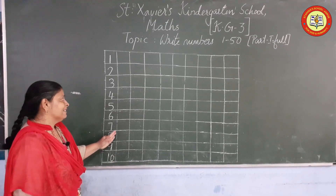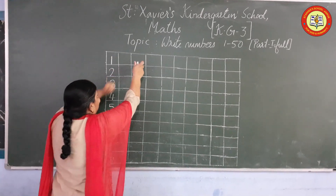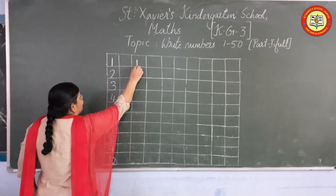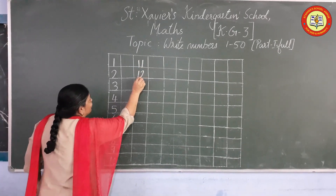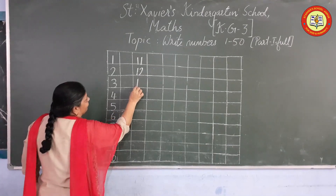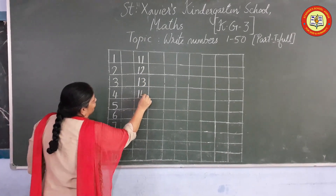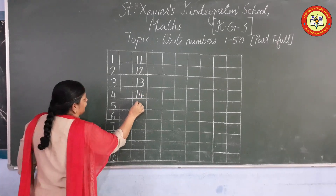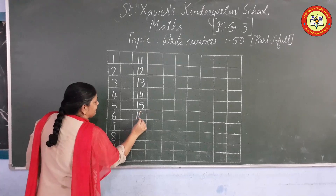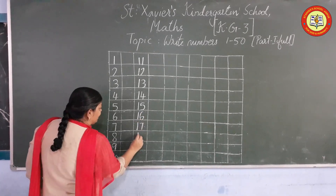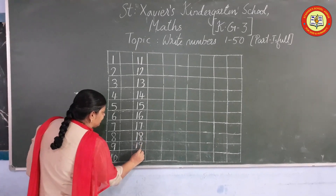Now, 10 after? Yes, 11. So you leave 1 square and write 11. 11 after — what comes? 12, 13, 14, 15, 16, 17, 18, 19.